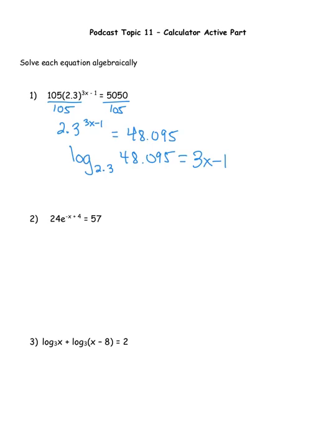Now it depends on the kind of calculator you have. If you're working with a TI-84 graphing calculator, you can go right to the log button in the math menu where you can change the base. If you have a TI-83 like me, I don't have that button, so I'll use the change-of-base formula. The change-of-base formula says: take the log of 48.095 and divide it by the log of 2.3 — changing to base 10 logarithms because I have a button for that.